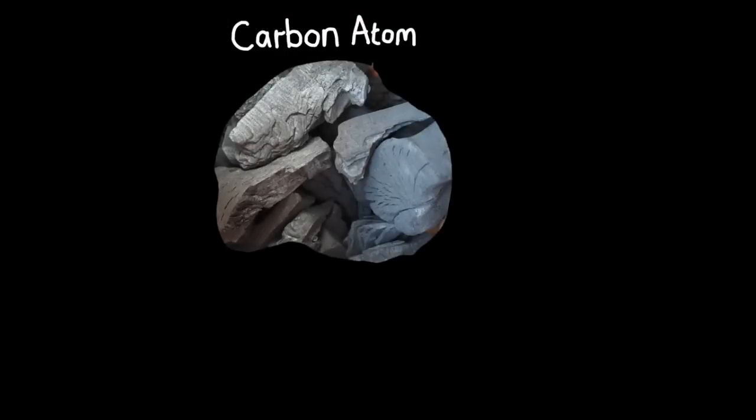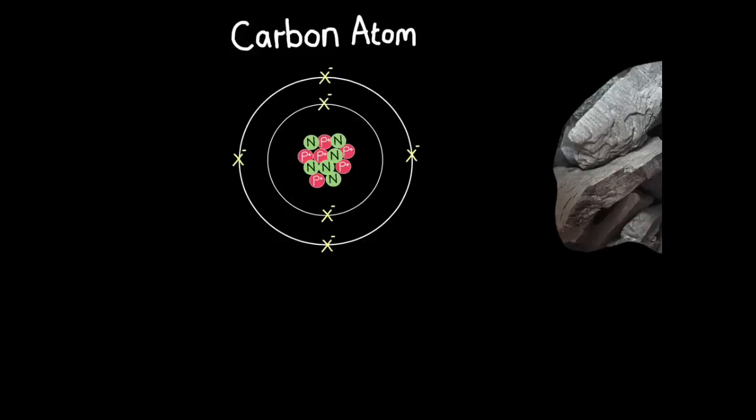So to understand the term relative atomic mass, we're going to first look at the carbon atom. Carbon is an element commonly found in coal. So if we could look at one atom in this coal, this is what it would look like.